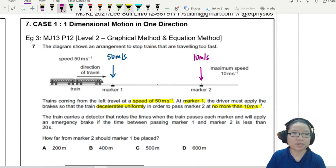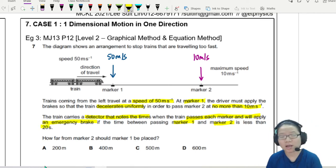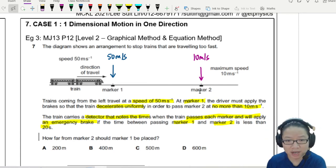The train carries a detector that notes the time when the train passes each marker and will apply an emergency brake if the time between passing marker 1 and marker 2 is less than 20 seconds. So how do you know your brake is not working properly? How do you know that when you pass through marker 2 you are faster than 10?